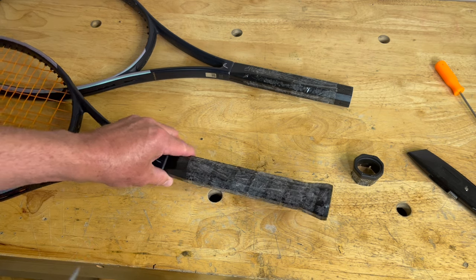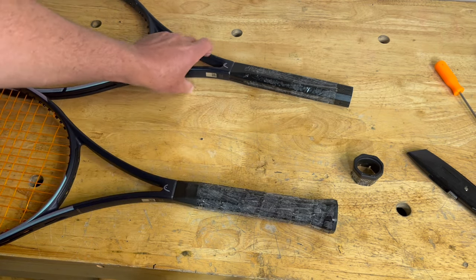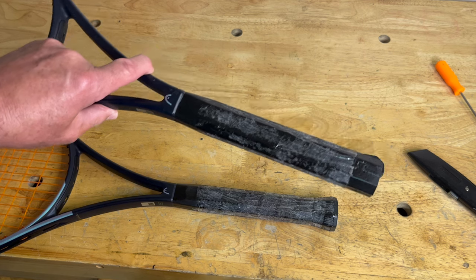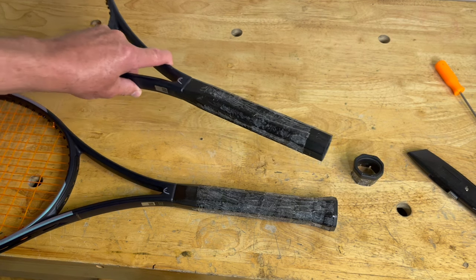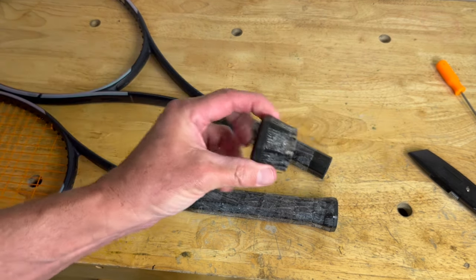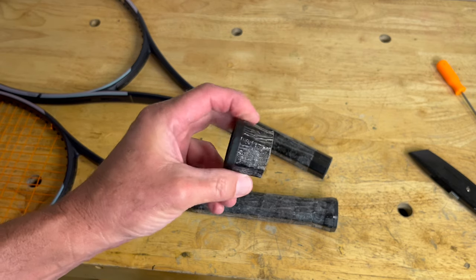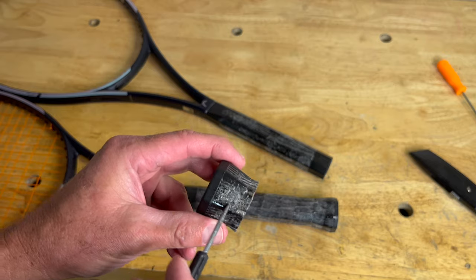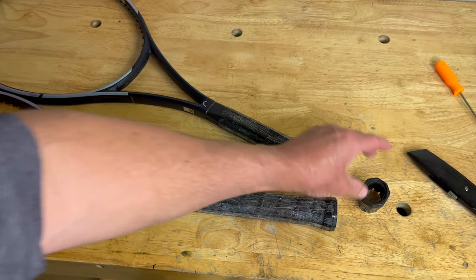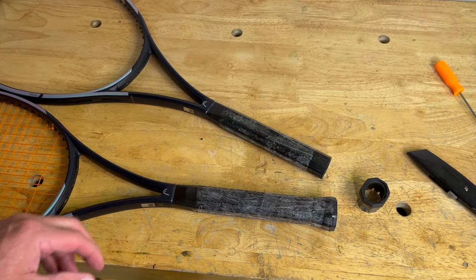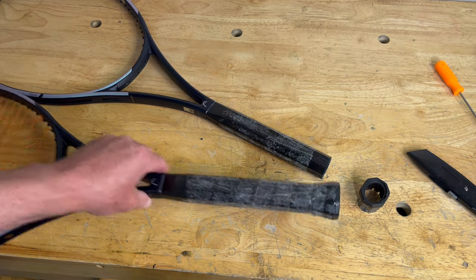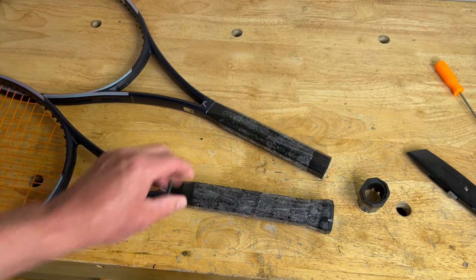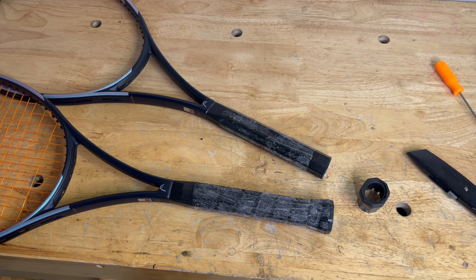So if you were thinking about extending your standard length racket to an extended length racket, you can't do it. At least not with a Head butt cap. You'll have to live with it unless you look to purchase another butt cap from another manufacturer and extend it. But then that may change some characteristics of the racket as well. So sad news on that front, but that's the teardown of the MPXL versus the standard length racket.